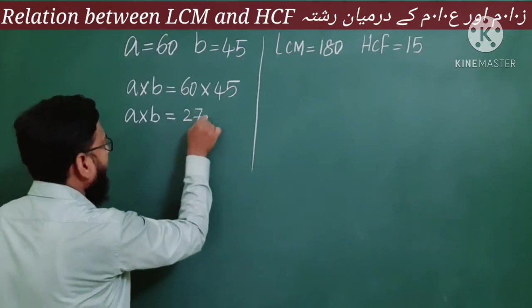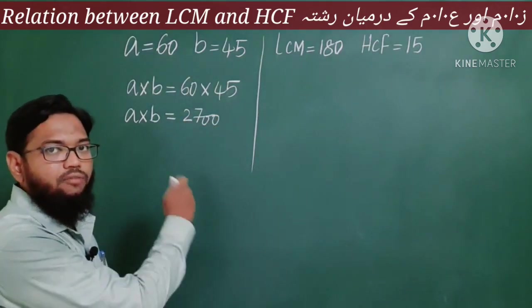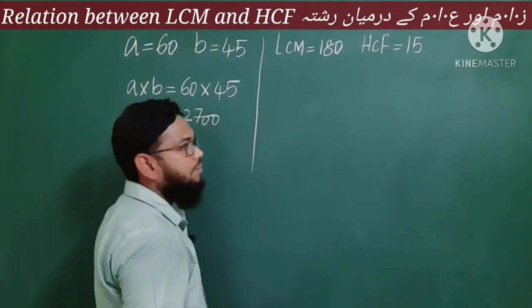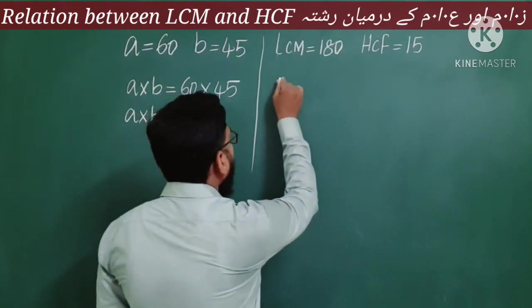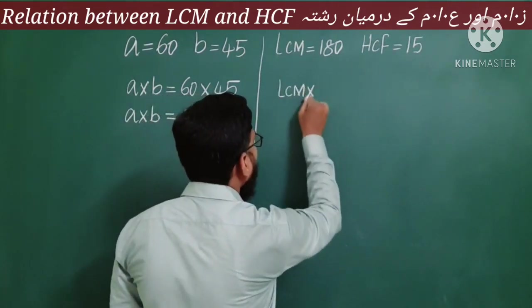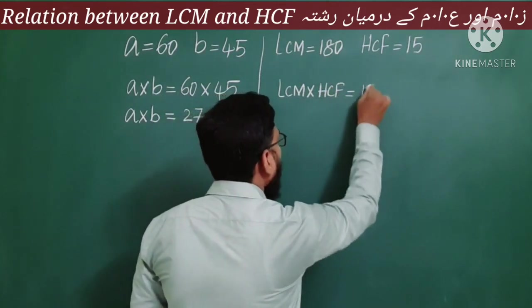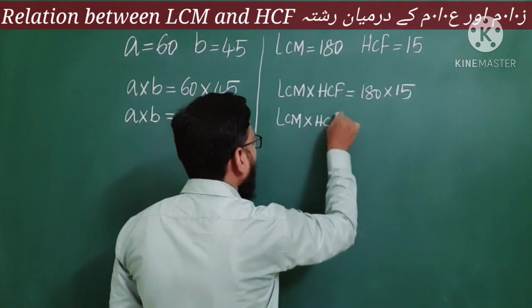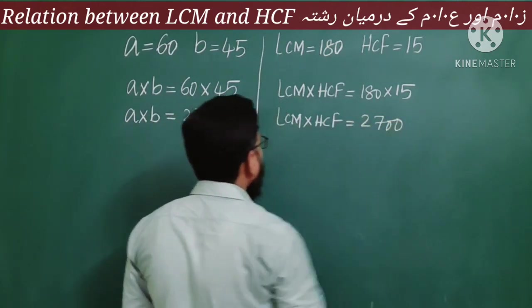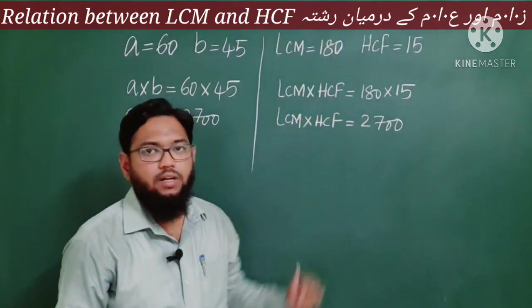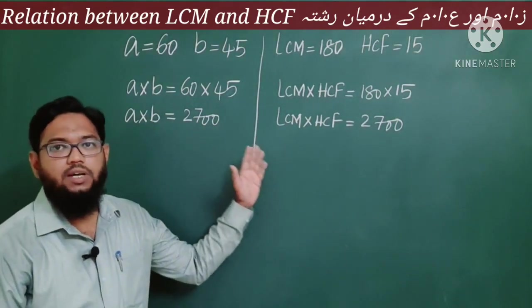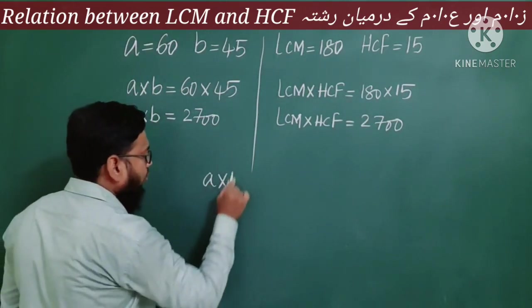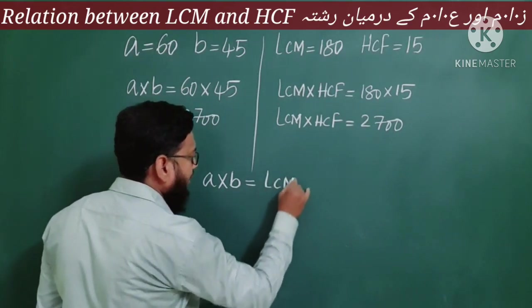A × B = 60 × 45 = 2700. So the product of the two given numbers is 2700. On the other side, we have LCM and HCF, which are 180 and 15. So now I multiply LCM × HCF = 180 × 15 = 2700. The product of LCM and HCF is also 2700. Therefore, A × B = LCM × HCF.